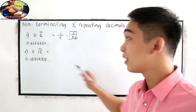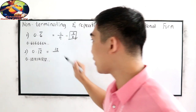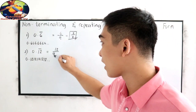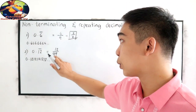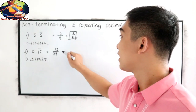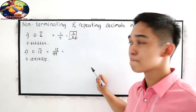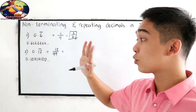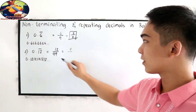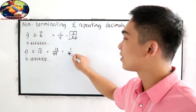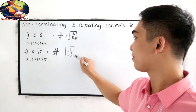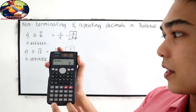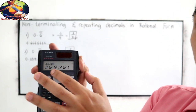That is equal to: copy 12 as the numerator. Since we have 2 decimal places, we write 99 as the denominator. 12 over 99 is divisible by 3, giving us 4 over 33. Let us check using our calculator: 4 divided by 33 equals 0.1212121212121. Correct.